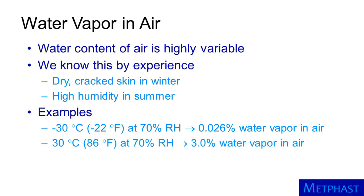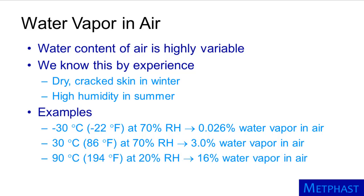At a temperature of 30 degrees Celsius (86 degrees Fahrenheit) and 70% relative humidity, water vapor would be about 3% of the atmosphere, higher than argon. This condition is common in Minnesota and many other places during the summer. In an industrial drying process, you may have very high temperatures with significant amounts of water vapor present. For example, at 90 degrees Celsius (194 degrees Fahrenheit) and 20% relative humidity, water vapor would comprise 16% of the air, nearly as much as oxygen.